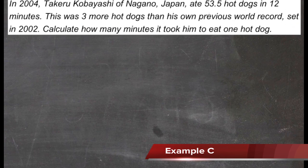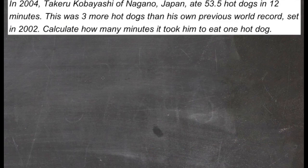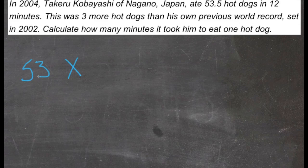Well, we know that the total time for 53 and a half hot dogs is 12 minutes. But we want to know the time for one hot dog. So we're going to set x equal to the time for one hot dog. Then we know that 53.5 times the time for one hot dog is equal to 12 minutes.